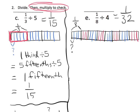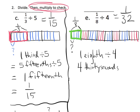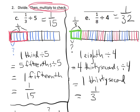We should write it out. So in unit form: one-eighth divided by four. One-eighth is four pieces out of thirty-two, so it's four thirty-seconds. That means we have four thirty-seconds divided by four, and four divided by four equals one-thirty-second. That's written as one over thirty-two.